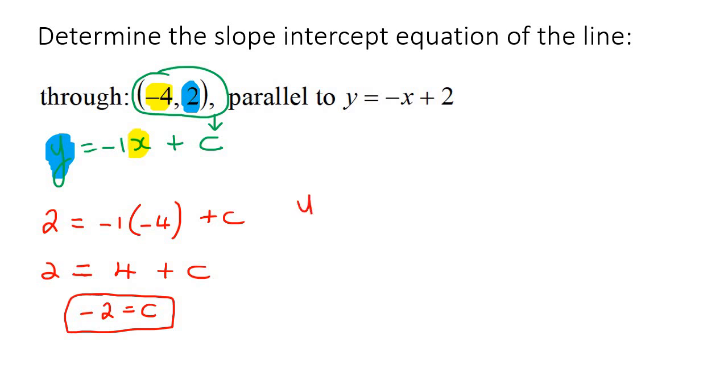If you work out the value of c, you would get 2 minus 4, which is negative 2. And so if you write out the equation, it would be y equals negative 1x minus 2. This is the answer. For the rest of this video, we're just going to practice some more of these.